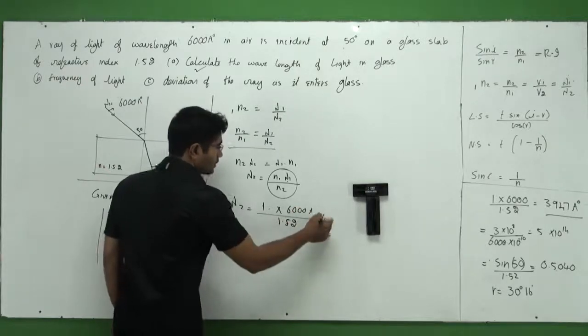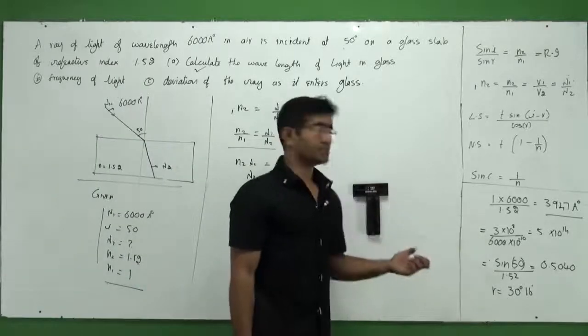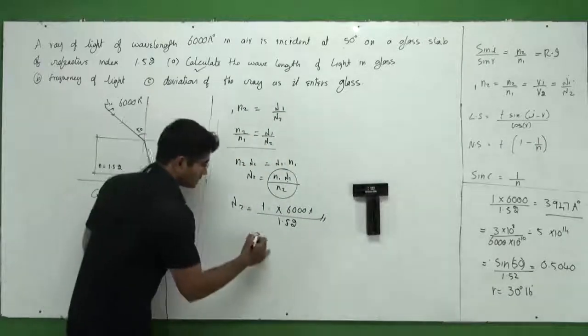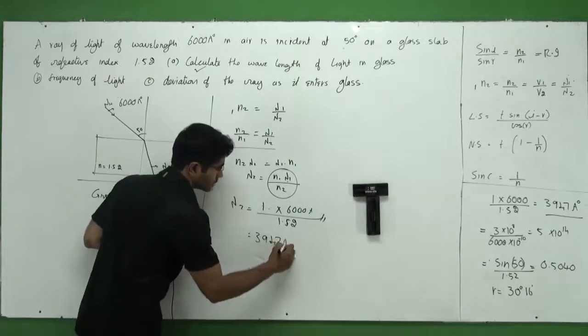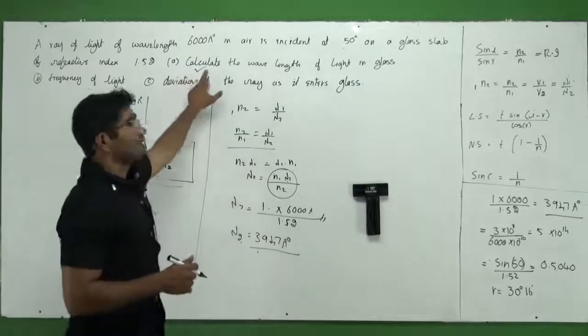So you've got to take your calculators now and solve this. I have solved this value here already so that we don't have to waste time. So the value comes up to around 3947 Angstrom. That is the first part of the equation. So I calculate the wavelength. Very simple.